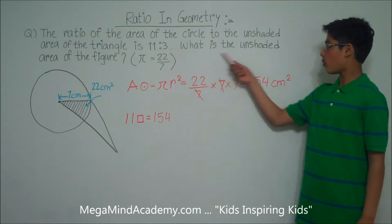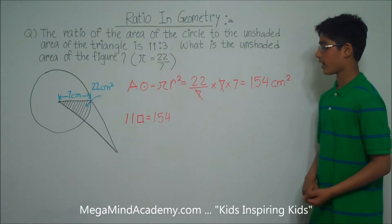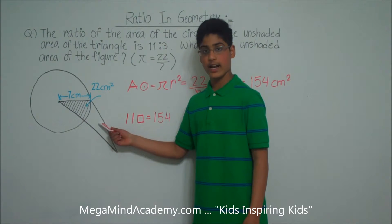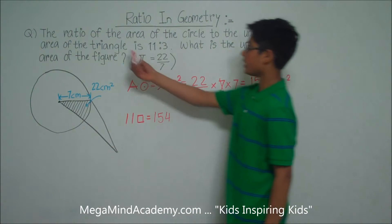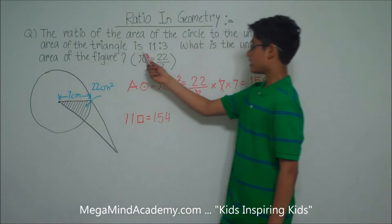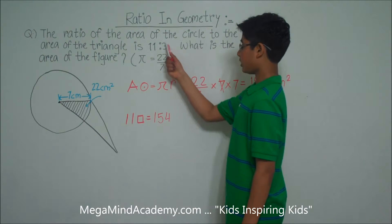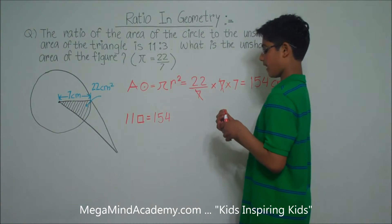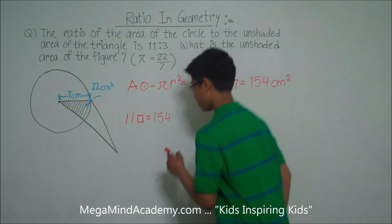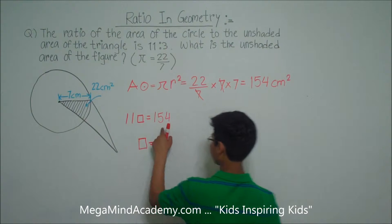Now we need to find out what is the unshaded area of the figure. To find the unshaded area of the figure, we also need to find the unshaded area of the triangle. The ratio of the area of the circle to the unshaded area of the triangle is 11 to 3, so the unshaded area of the triangle is 3 units. We need to find the value of 3 units. To do that, we first find the value of 1 unit: unit is equal to 154 divided by 11.